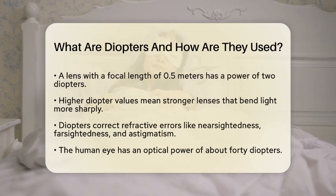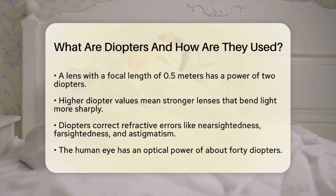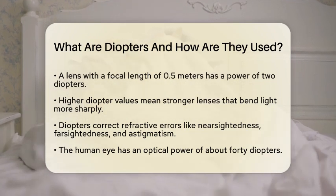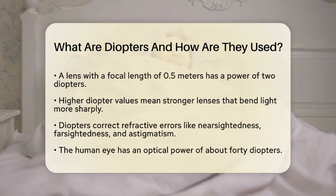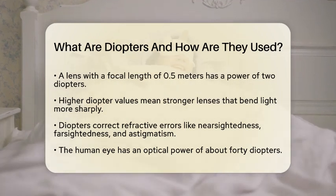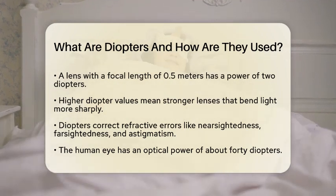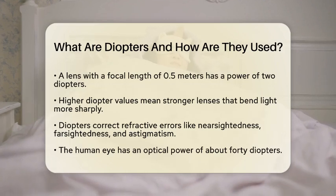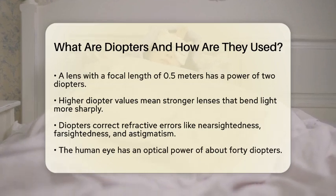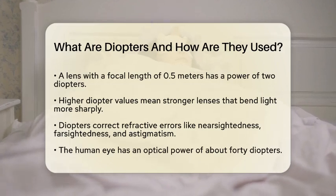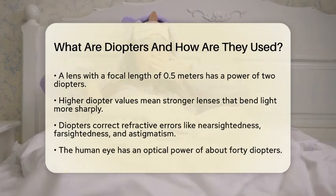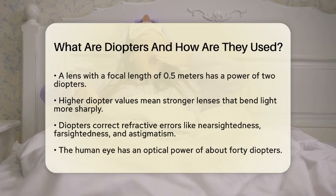In practical terms, diopters help correct refractive errors in the eye, such as nearsightedness, farsightedness, and astigmatism. The human eye has an optical power of about 40 diopters, which allows it to focus on objects at different distances by changing the shape of the lens inside the eye.